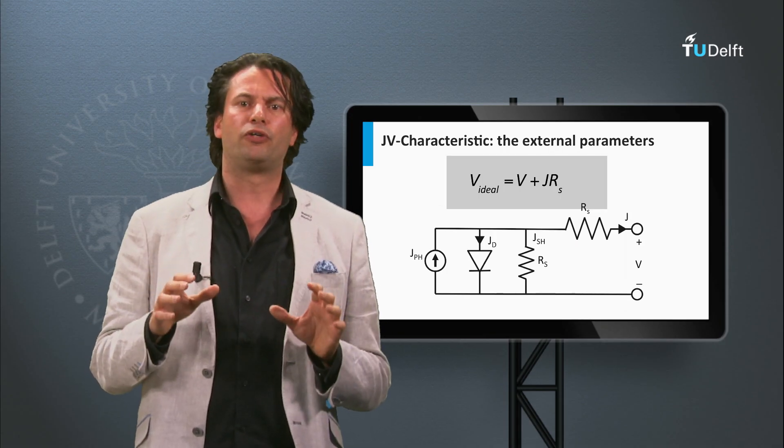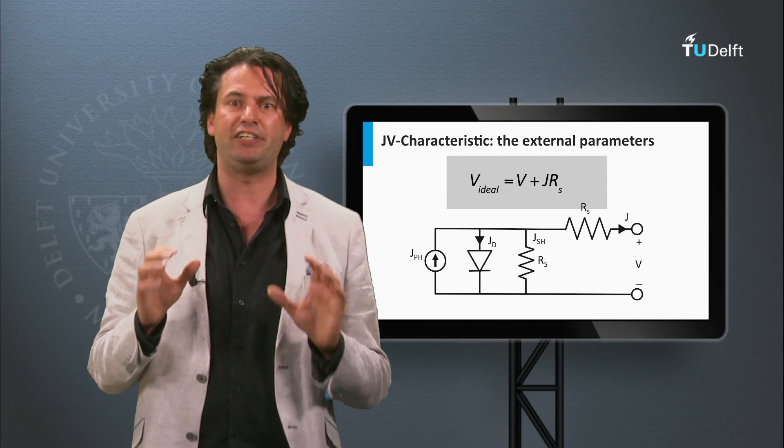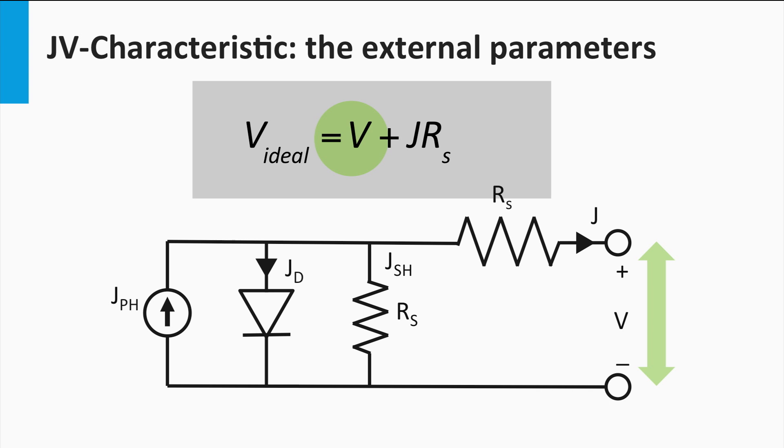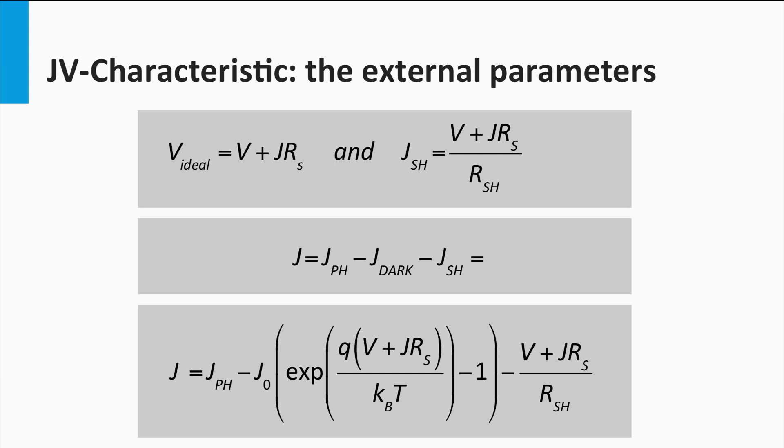The series and shunt resistance results in a more complicated expression for the J-V curve. The voltage at the terminal is the voltage of an ideal solar cell minus the voltage lost over the series resistance. The total current is the photocurrent density minus the dark current density of the diode and the current density leaking through the shunt resistance. The shunt current is given by the voltage of an ideal solar cell divided by the shunt resistance. This results in the complex expression shown here. The current density J appears on the left-hand side of the equation as well as on the right-hand side. Note that this expression cannot be solved analytically.